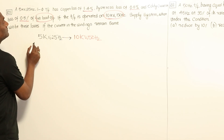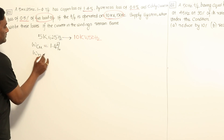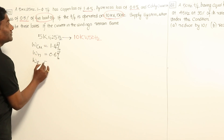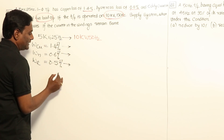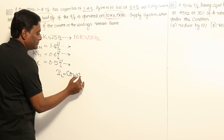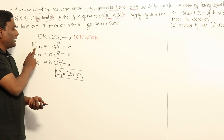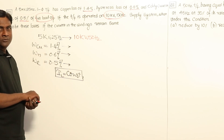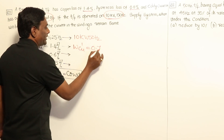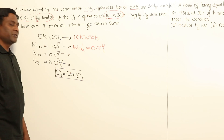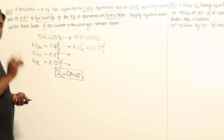In the first case, copper losses are 1.4%, hysteresis losses 0.6%, and eddy current losses 0.5%. Now, how do these losses vary when the current in the windings remains the same? Since copper losses depend on current and current is the same, copper losses in watts remain the same. So the new copper losses become 0.7% — the actual watts are the same but the percentage changes.